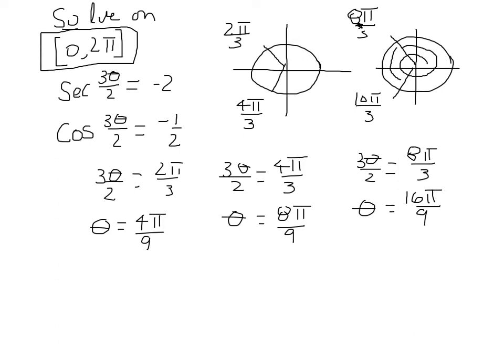So let's try the same thing with 10 pi over 3. 3 theta over 2 equal to 10 pi over 3. Multiply both sides by 2 thirds and we're going to wind up with theta equal to 20 pi over 9. But that is greater than 2 pi. So that would not be a solution.